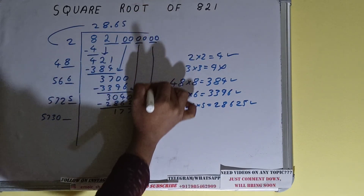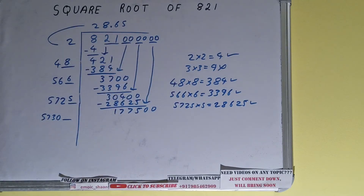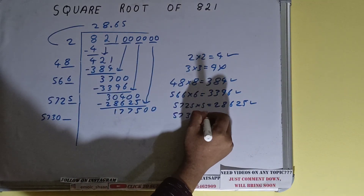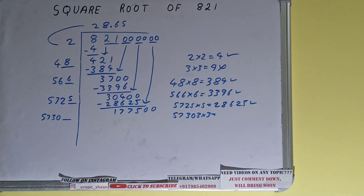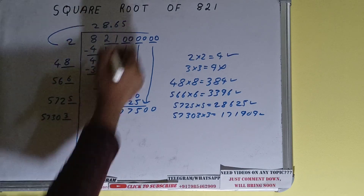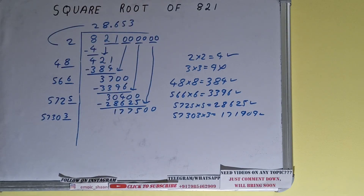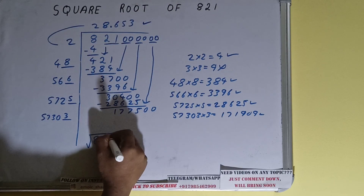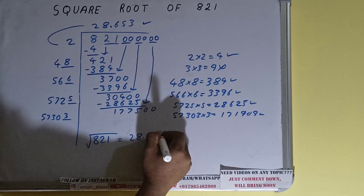And 1775 will be left. So add both: 5725 plus 5 will be 5730, and one digit extra. This number we need to make it big so bring the next pair down and it will become 177500. Compare this 57 with this 177. 573 times 3 is 1719, so we can try 3 times. 57303 into 3, it will be 171909. That is good to take, so 3 here and 3 here. We got the answer correct up to three decimal places, so the square root of 821 will be 28.653.